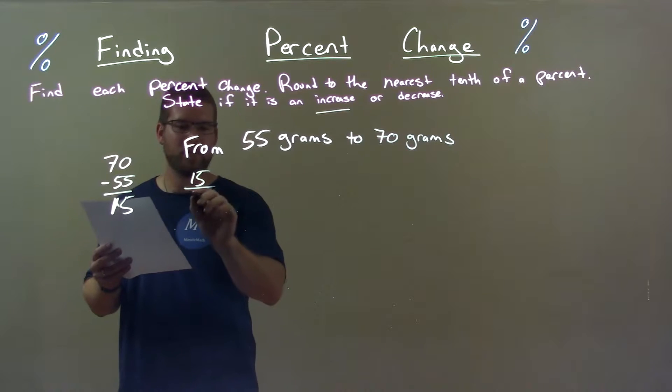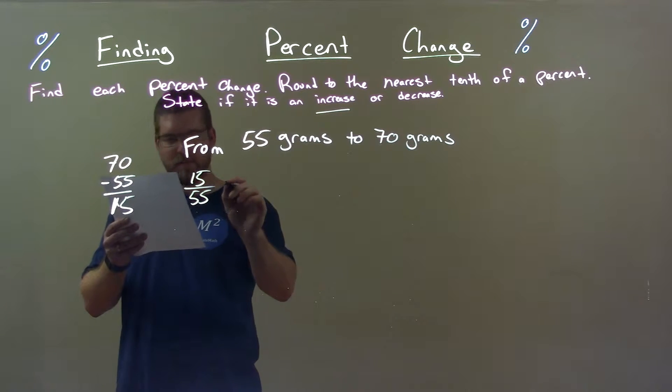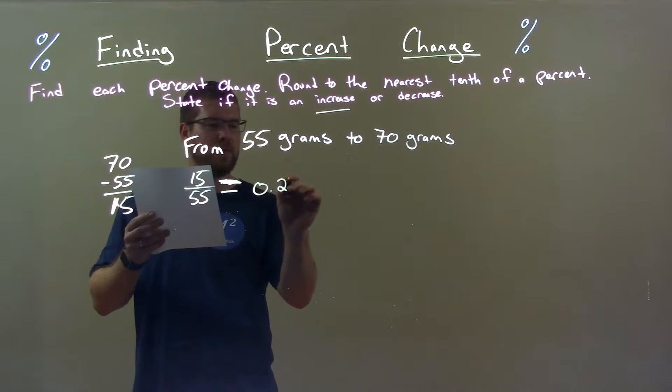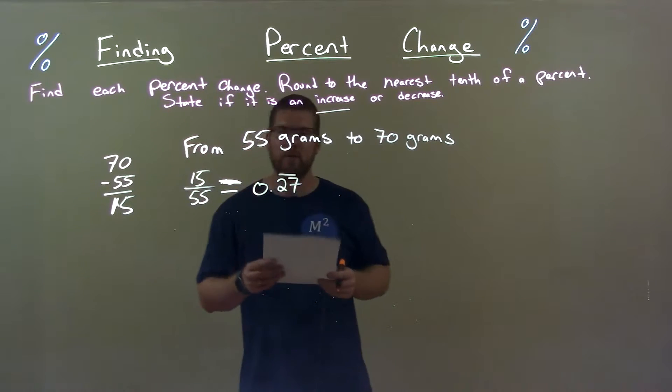Take the 15 divided by the first number 55 and we get the decimal, well, no approximate actually, exactly 0.27. The 27 is repeating forever.